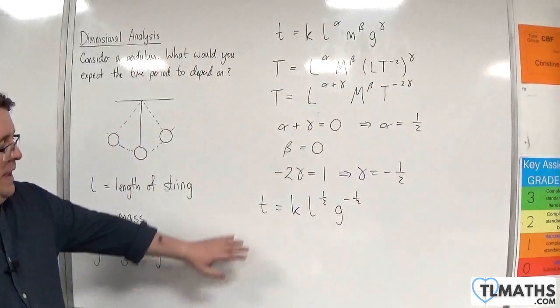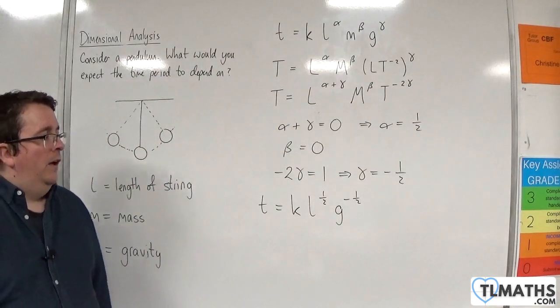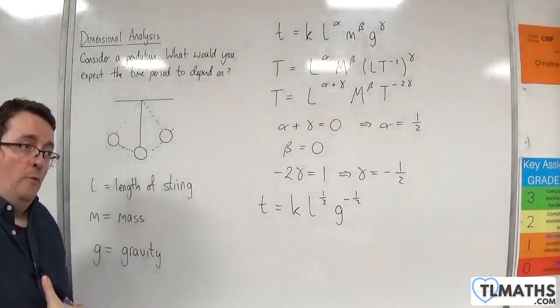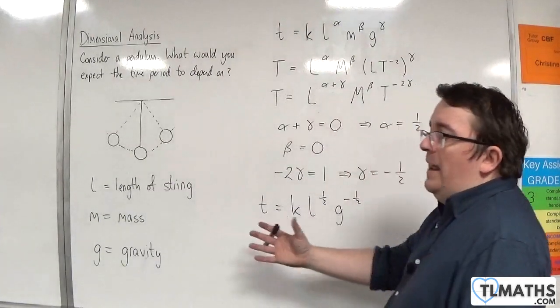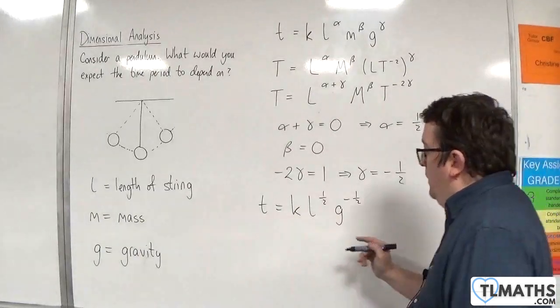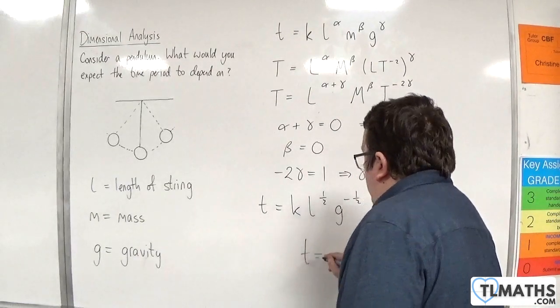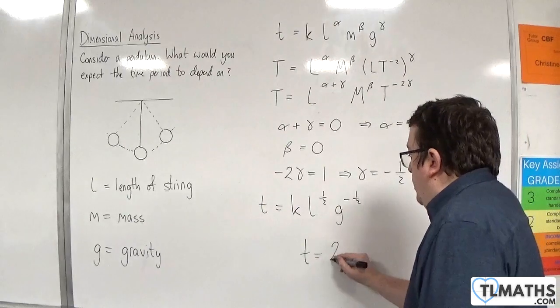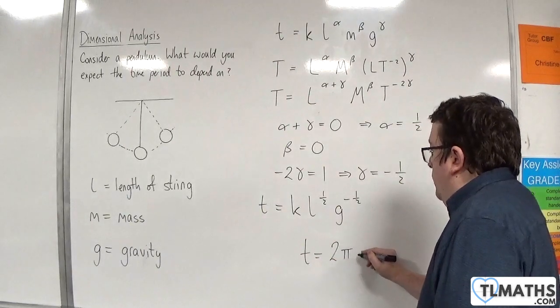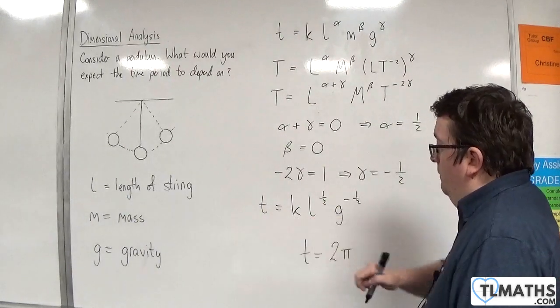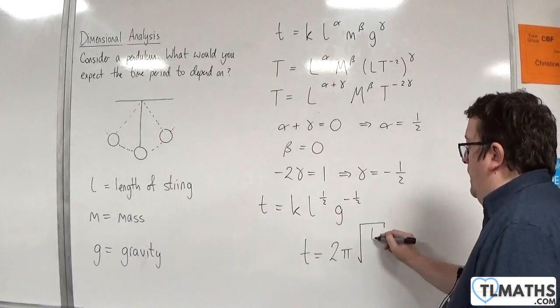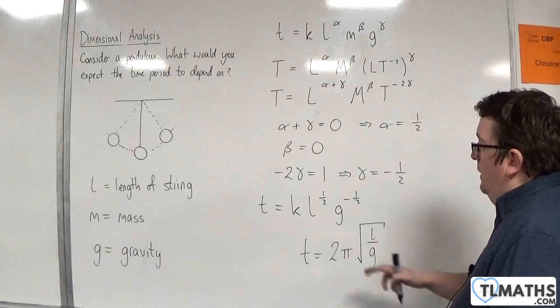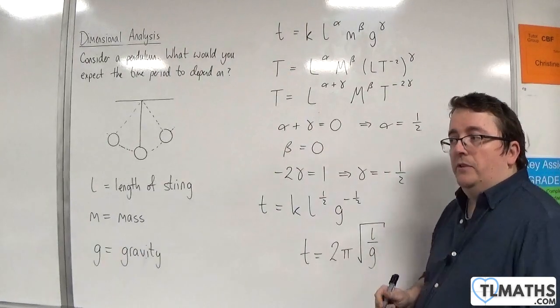And so this appears to be the dimensions that I need to work with, and the formula that I would need to build up. Now, you might actually know what the formula is. The actual formula is T is equal to 2 pi, which is your constant at the front, times by the square root of L over G. And that's the L to the half G to the minus 1 half.